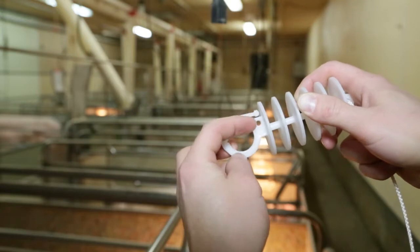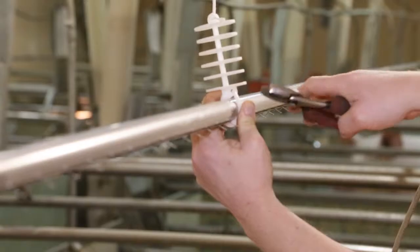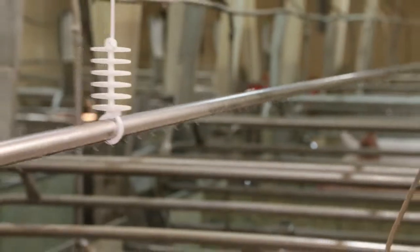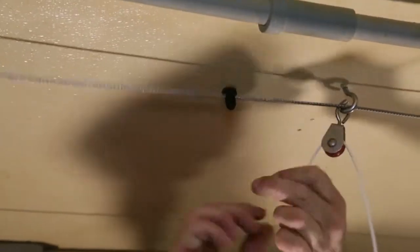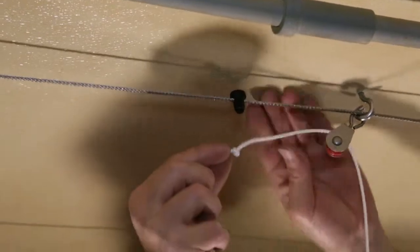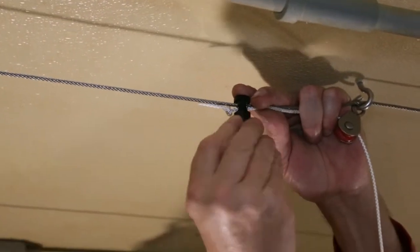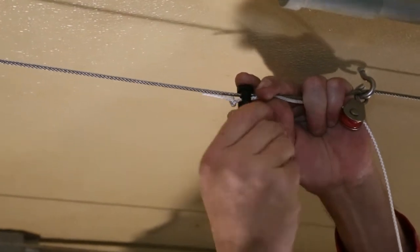Do not clip the insulator closed until certain no further adjustments are needed. Once clipped closed, they cannot be adjusted or reused. Slip the untied end of the ropes through the support pulleys and tie a simple knot at the end. Orient the ropes through the pulleys to allow the corona pipe runs to be lifted by the winch.